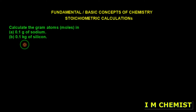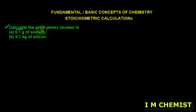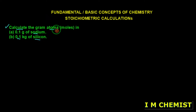Hello students, welcome to I Am Chemist. In today's video we are going to calculate a numerical. The question is: calculate the gram atoms in 0.1 gram of sodium and 0.1 kilogram of silicon.